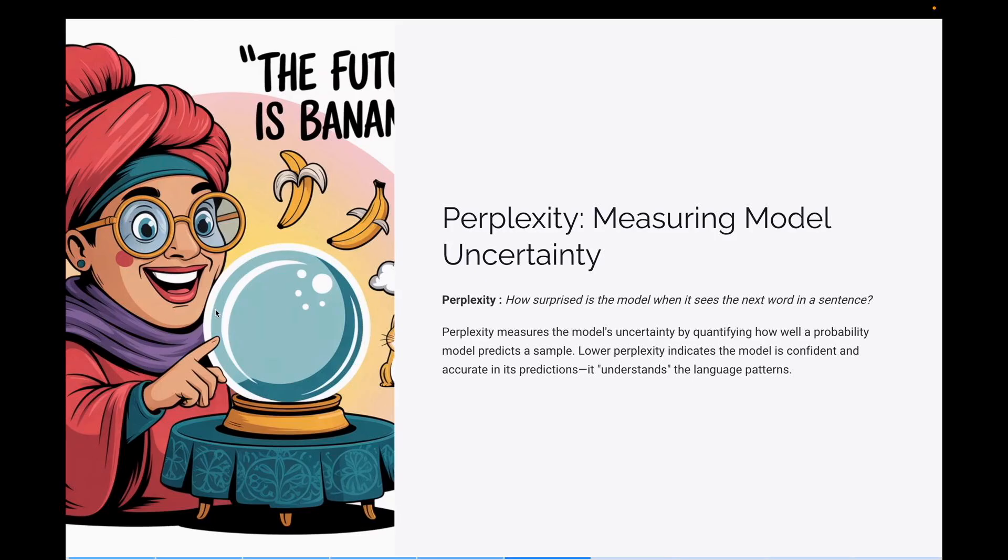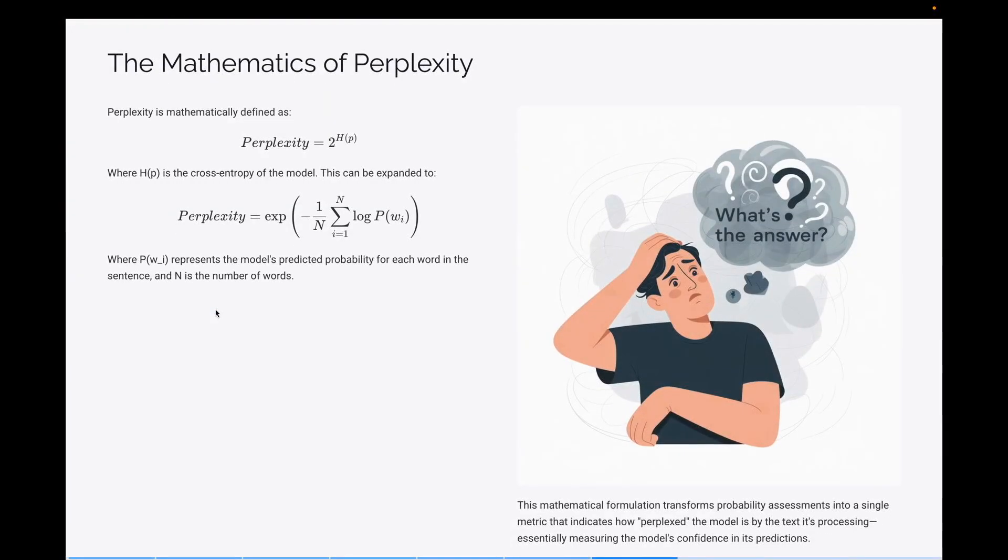The perplexity score basically measures how confident the model is about its predictions. So for example, if it is very surprised to see the next word, it means that it has not understood the patterns of the words in the sentence as well. This perplexity score, if you look at it, it's nothing but two to the power cross entropy of the model.